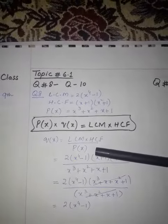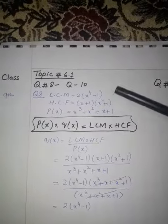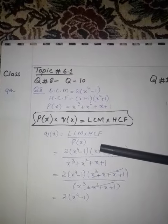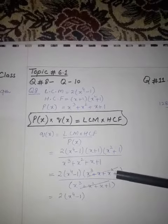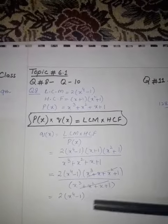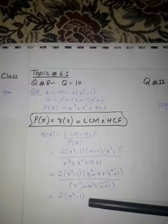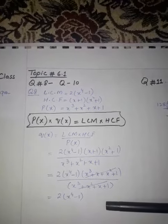Putting values one by one, taking product of both the expressions, cancel out if they are able to cancel. 2 into x power 4 minus 1, this is q of x.